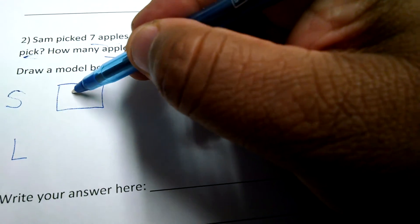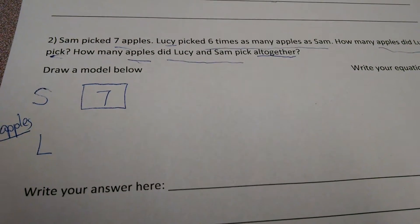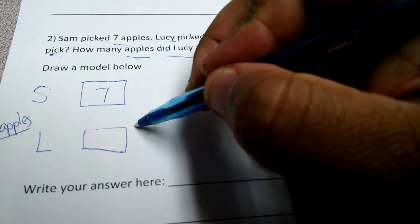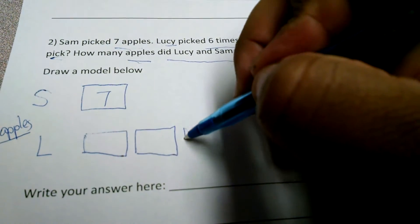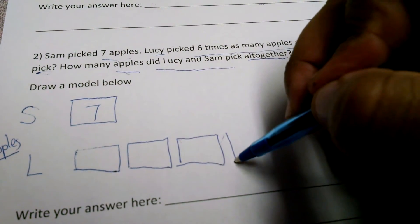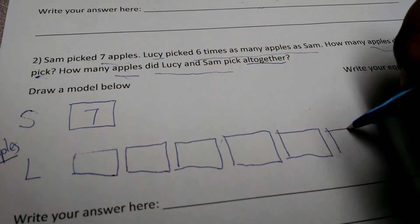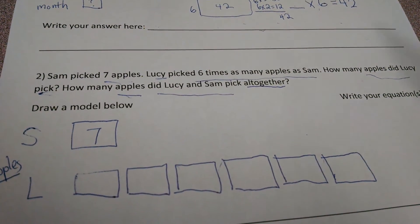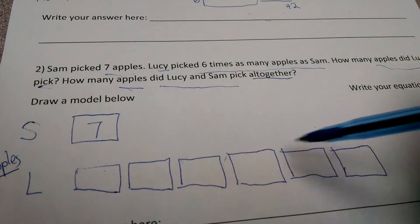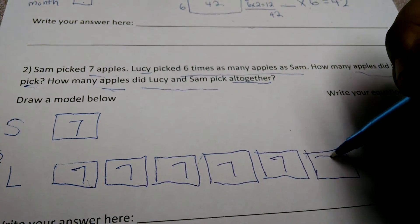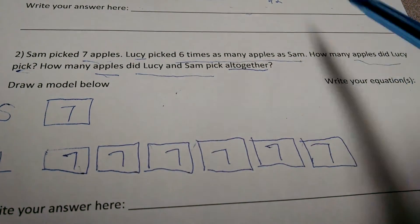So, I have Sam and I have Lucy. Sam picked seven apples. So, I can draw a bar and write seven. And I know these are apples. Lucy picked six times as many. So, that means she's got... I have to represent this by using six bars of equal size. Because when you're multiplying or dividing, you're working with equal groups. And I know, well, wait. That's six times as many. Well, all these bars are equal to seven.